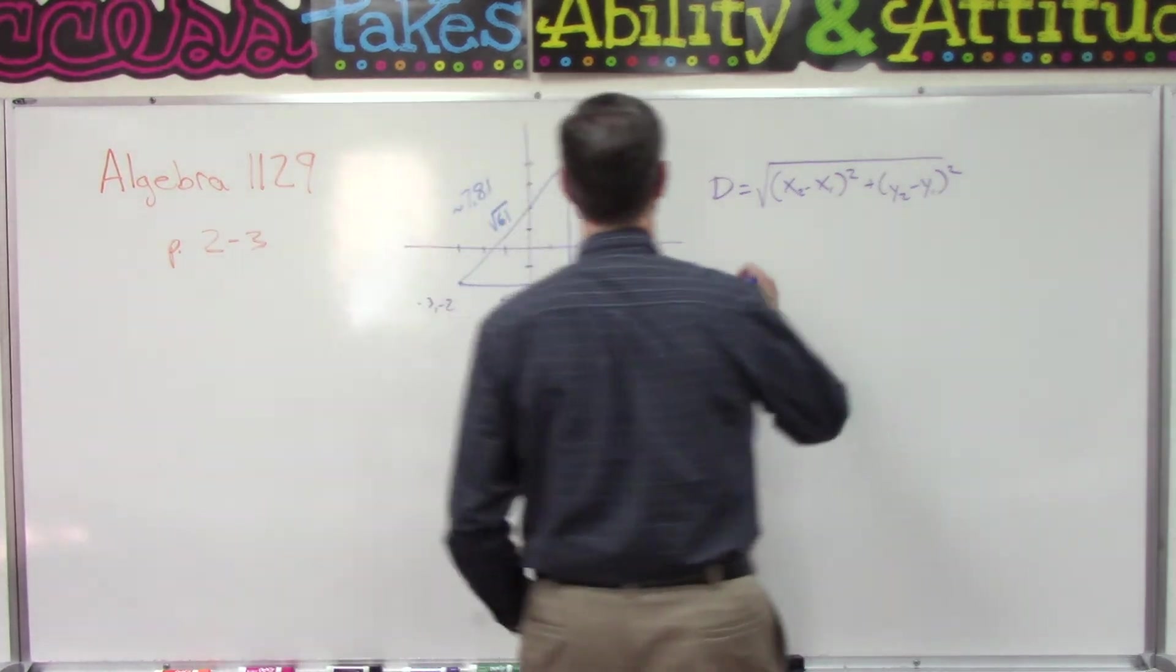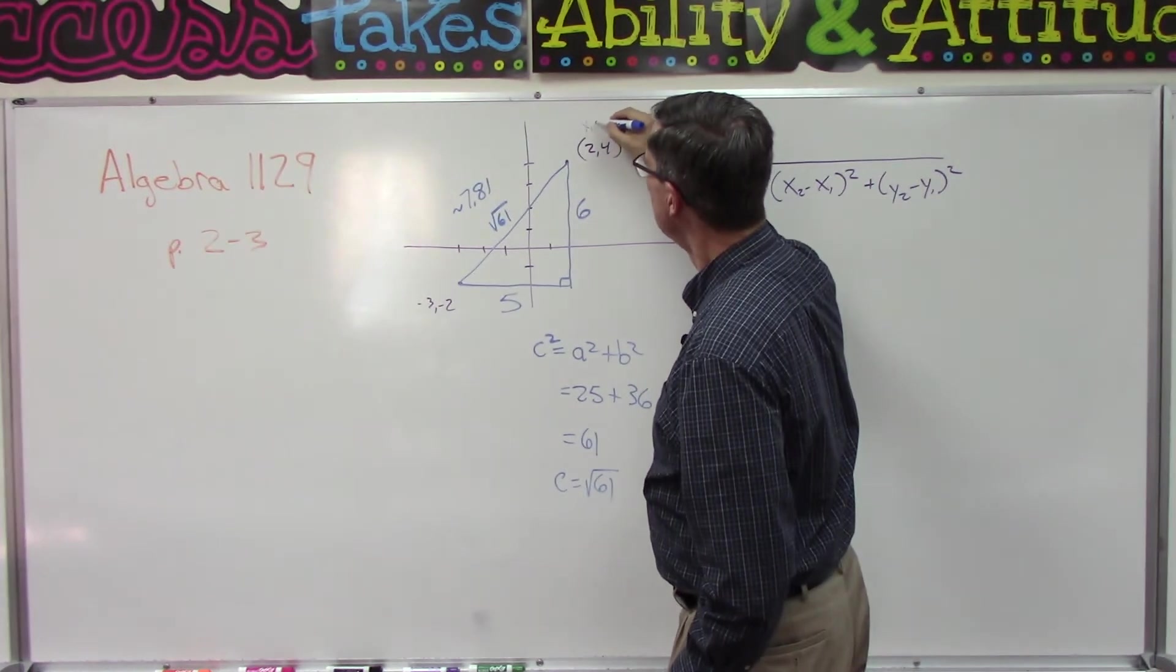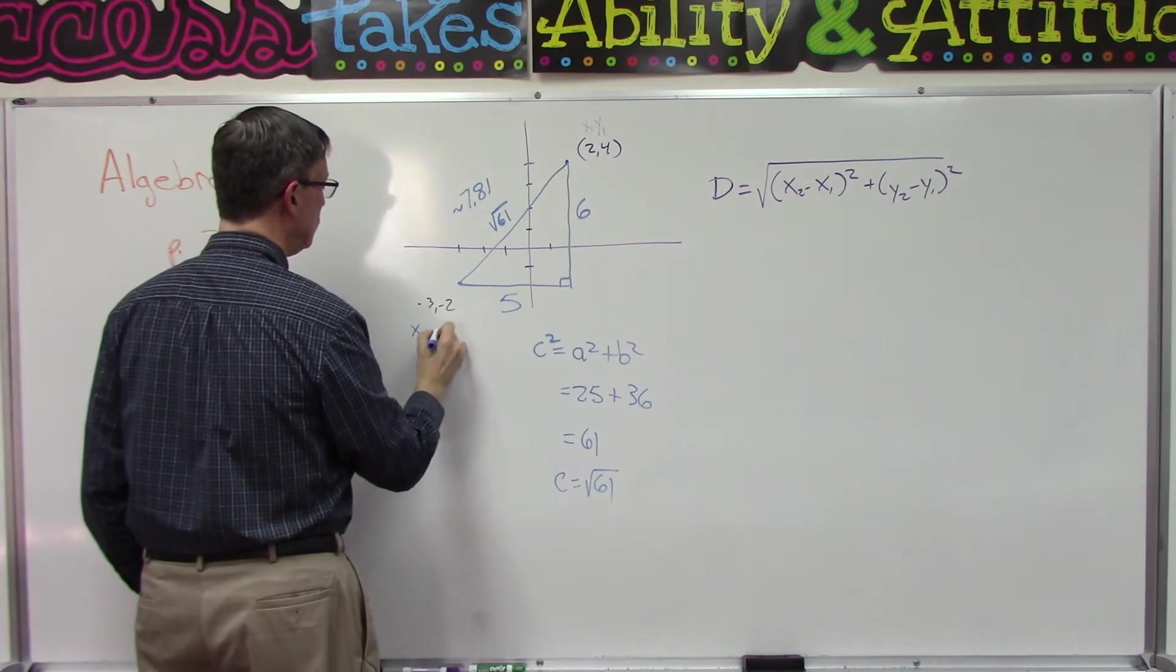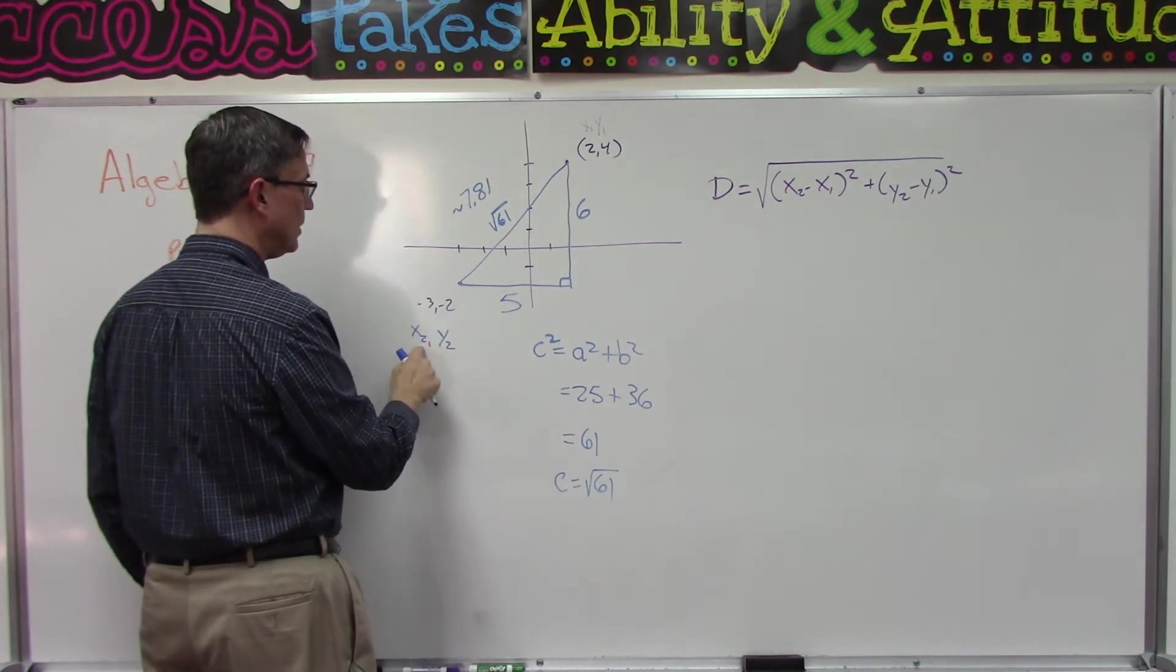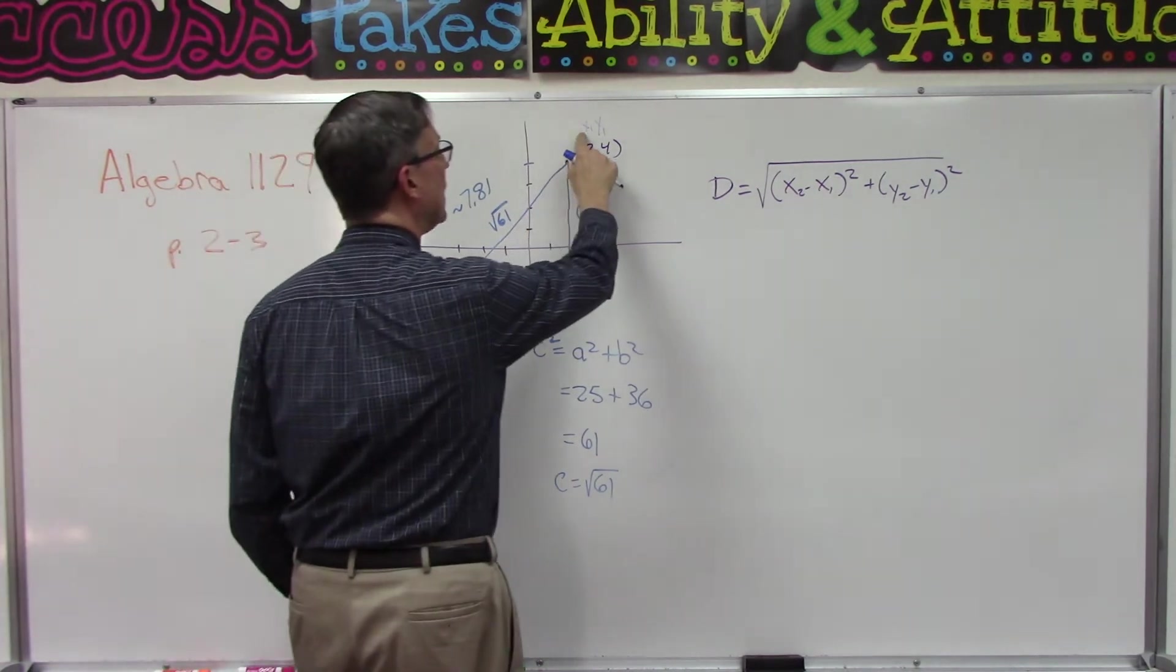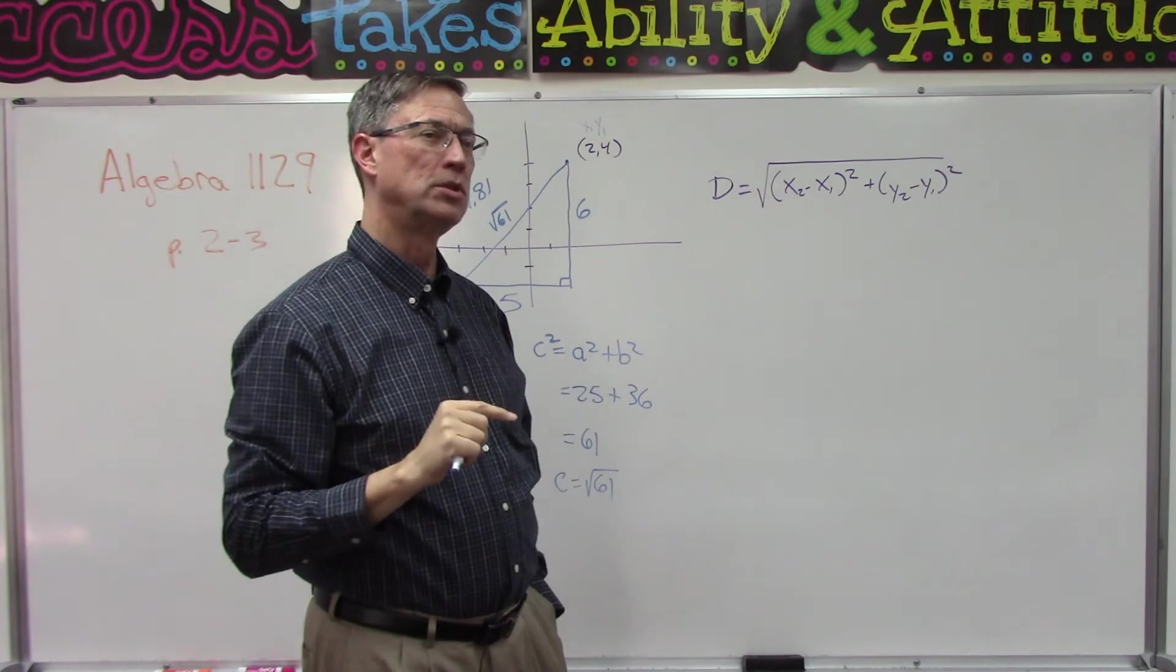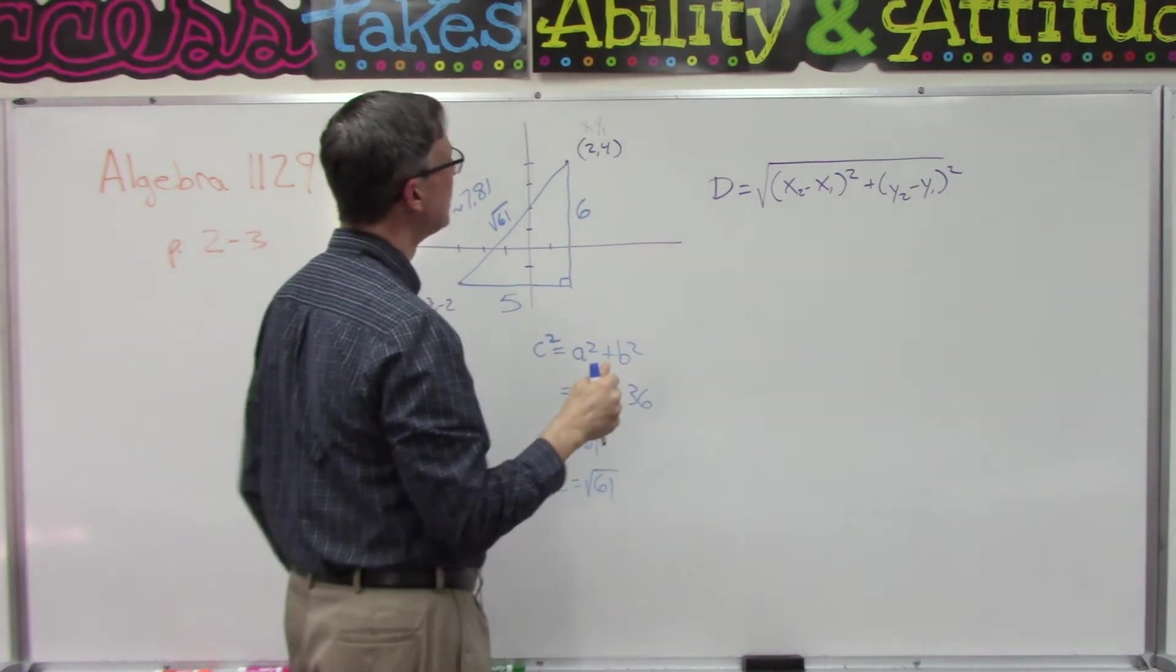Let's call this point up here x1, y1. We'll call this point down here x2, y2. It just means the x and y coordinates for the second point, the x and y coordinates from the first point. We're not using the one or the two to square it or do any math, we're just identifying it.